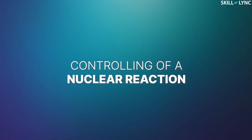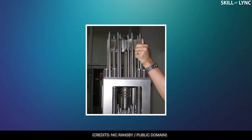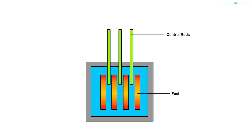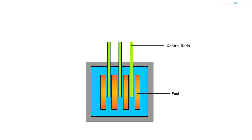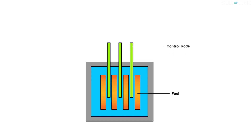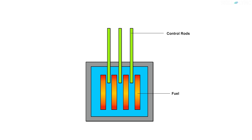After the moderator, let's see the controlling of nuclear reaction. The rate of the fission reaction happening in the reactor core can be controlled by controlling the number of neutrons that induce further fission. Control rods are helpful in capturing the neutrons which would otherwise cause fission. In order to slow down the fission rate, the control rods are inserted into the reactor core so that they absorb the neutrons. On the other hand, when the control rods are extracted, the fission rate increases, thus increasing the power output.